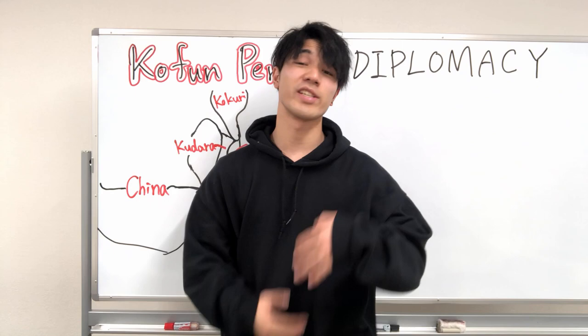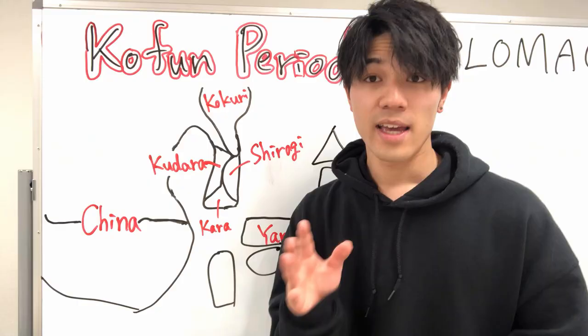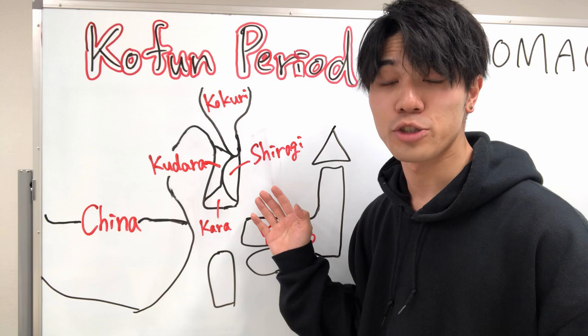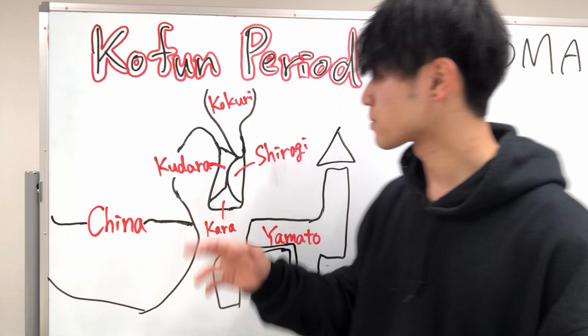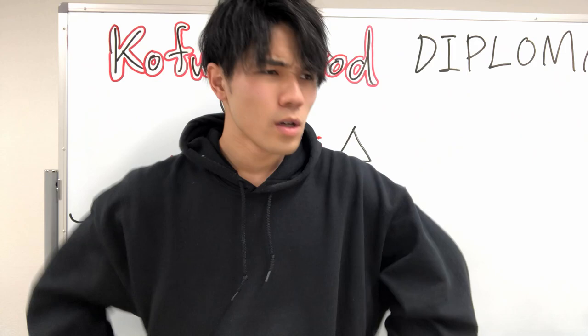Japanese history cannot be talked about without talking about Korea and China. In the fourth century, the situation around the Korean Peninsula changed — three countries on the peninsula conflicted with each other. Those three kingdoms were Koguryo, Baekje, and Silla — this is how I remember them: Kokuri, Kudara, Shiragi.